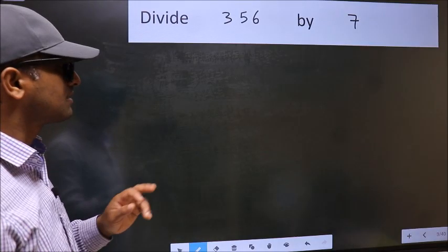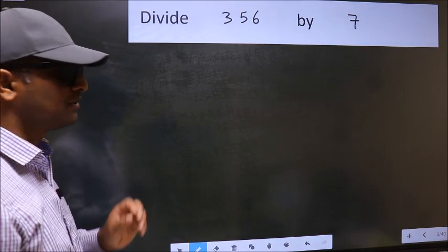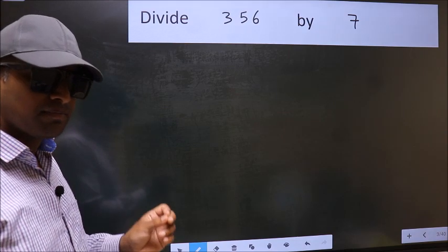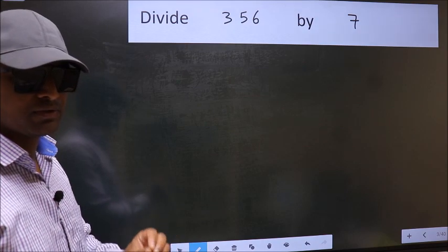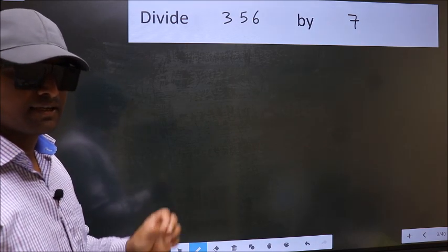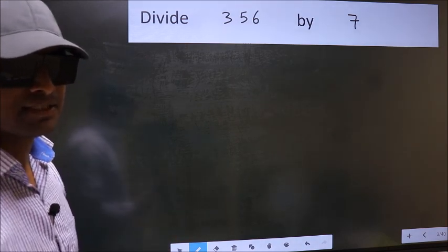Divide 356 by 7. While doing this division, many do this mistake. What is the mistake that they do? I will let you know. But before that, we should frame it in this way.